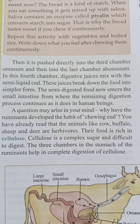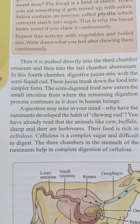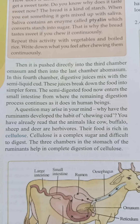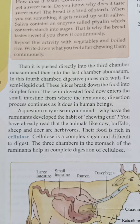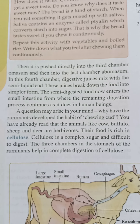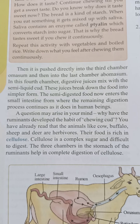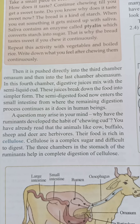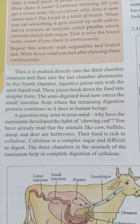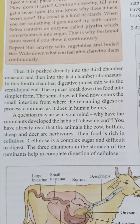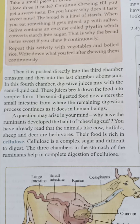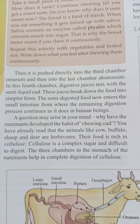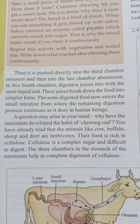Then it is pushed directly into the third chamber — جسے omasum کہتے ہیں — and then into the last chamber, abomasum۔ اس چوتھے chamber abomasum میں digestive juices اس semi-liquid cud میں mix ہوتے ہیں۔ These juices break down the food into simpler form۔ اس کے بعد وہ semi-digested food stomach سے small intestine میں چلا جاتا ہے۔